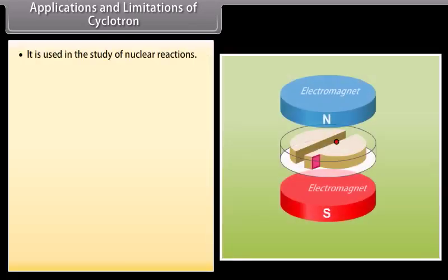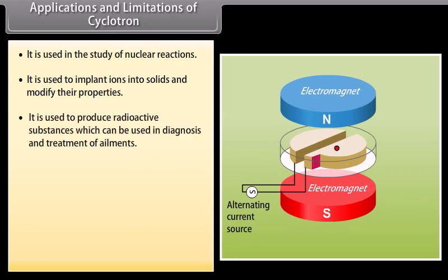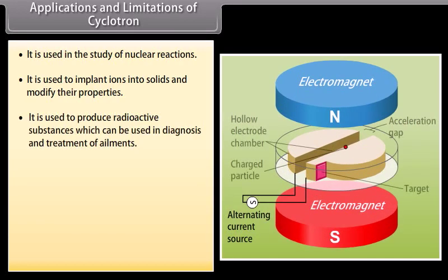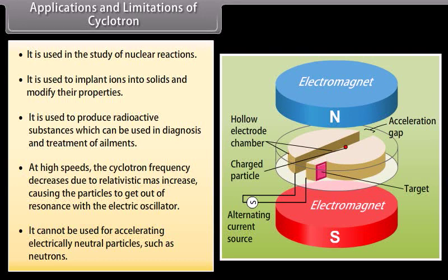Applications and Limitations of the Cyclotron. It is used in the study of nuclear reactions, to implant ions into solids and modify their properties, and to produce radioactive substances for diagnosis and treatment of ailments. A limitation is that at high speeds the cyclotron frequency decreases due to relativistic mass increase, causing particles to get out of resonance with the electric oscillator. It also cannot be used for accelerating electrically neutral particles such as neutrons.